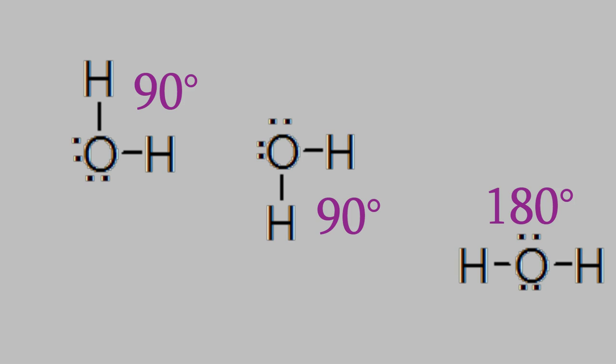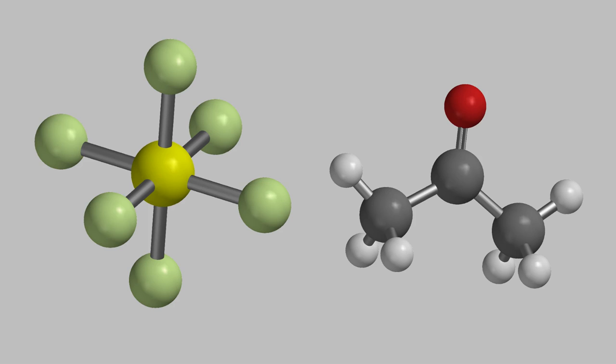But in reality, plenty of molecules have interesting three-dimensional shapes, and it turns out we can tell what shape the molecule will be just by looking at the Lewis structure. Here's how.